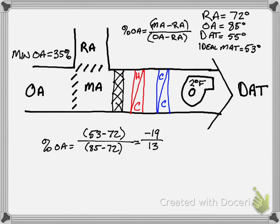Now right away we can see that we have a negative number on the top and a positive number on the bottom, and so we know we're going to come out to be a negative number, which ends up being negative 146%. Obviously this number isn't possible, but if we just look at the minimum and maximum, this is less than the 35% minimum that this air handler is capable of. So we're not able to meet our desired mixed air temperature at this scenario.